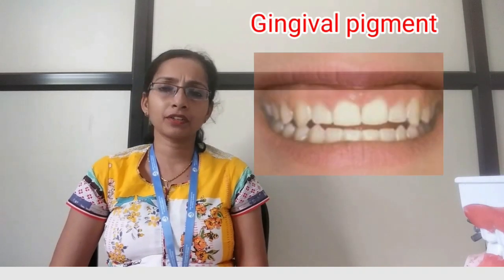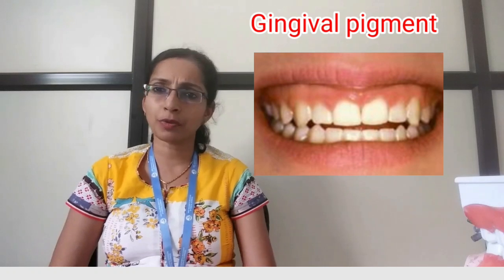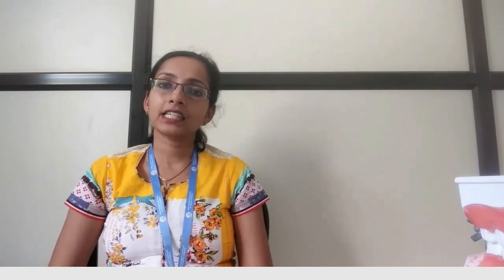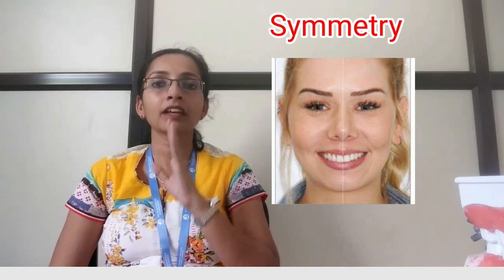Regarding gingival pigment, the ideal colour of the gingiva would be coral pink or orange-pinkish. The next important point in aesthetics is symmetry — and this refers not only to the symmetry of the teeth on either side, but also that the midline between the central incisors should be in alignment with the midline of the face.